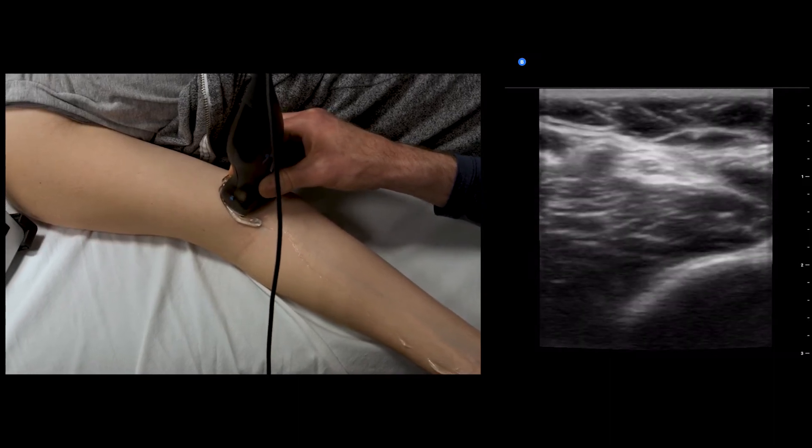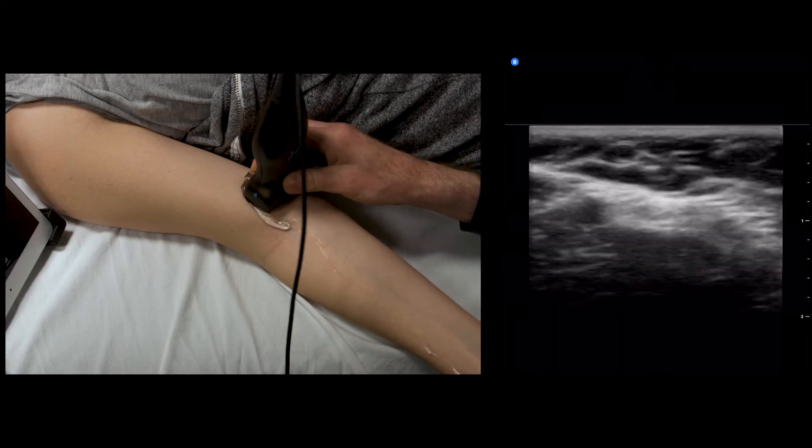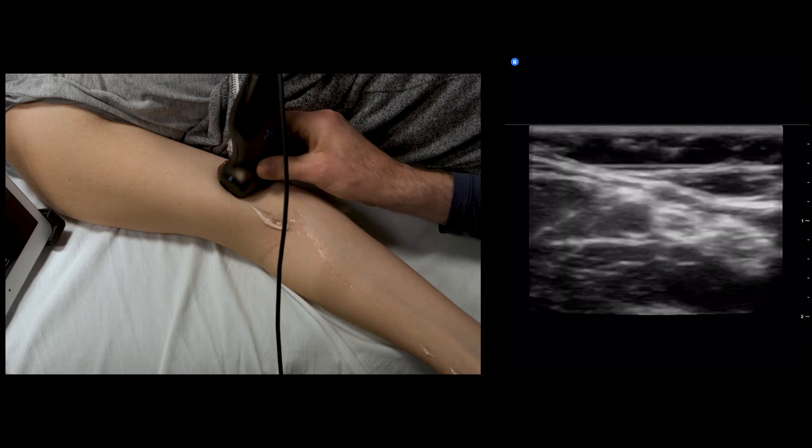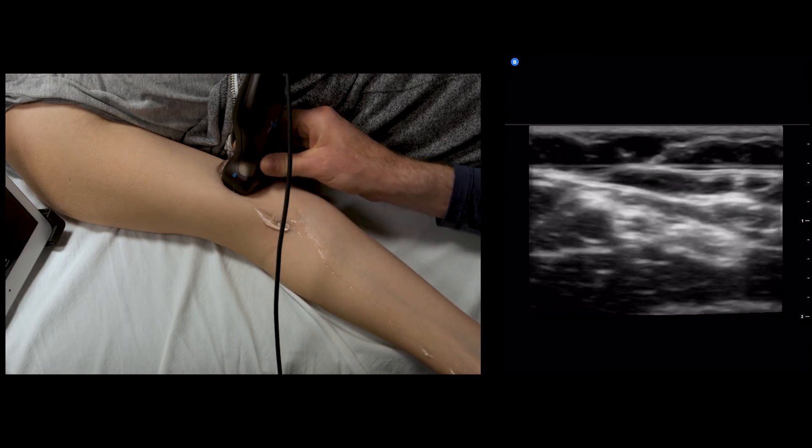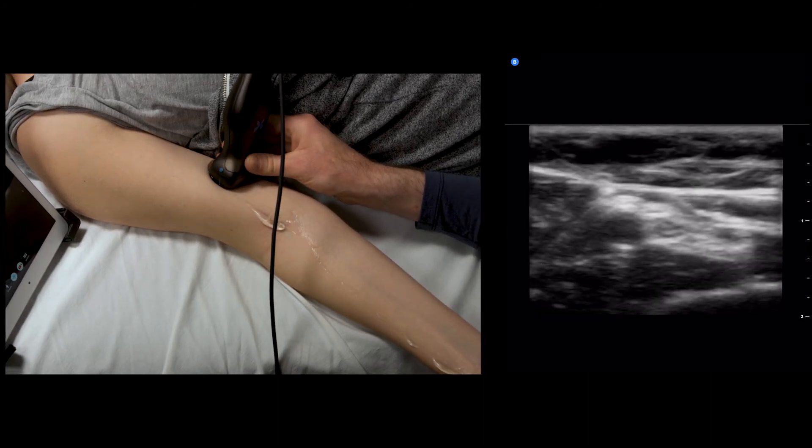Here is the median nerve. I'm going to make it a little bit more superficial, adjacent to the brachial artery. It stays relatively the same in terms of its echo structure and size all the way up to the cords of the plexus.